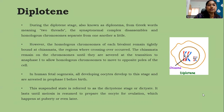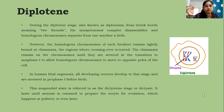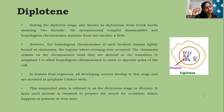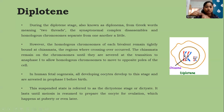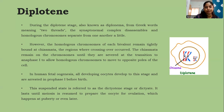During the diplotene stage, also known as diplonema meaning 'two threads' in Greek, the synaptonemal complex disassembles and homologous chromosomes separate slightly from one another. However, the homologous chromosomes of each bivalent remain tightly bound at the chiasmata — the regions where crossing over occurred. The chiasmata remain on chromosomes until they are severed at the transition to anaphase one. In human fetal oogenesis, all developing oocytes develop to this stage and are arrested in prophase one before birth; this suspended state is referred to as the dictyotene stage, lasting until meiosis is resumed at puberty in preparation for ovulation.